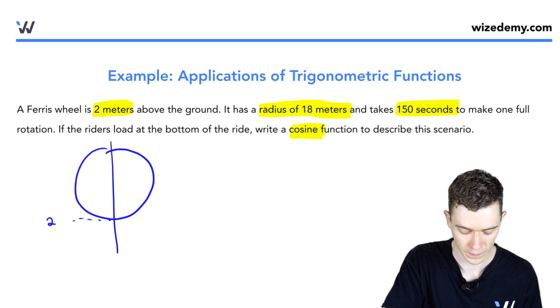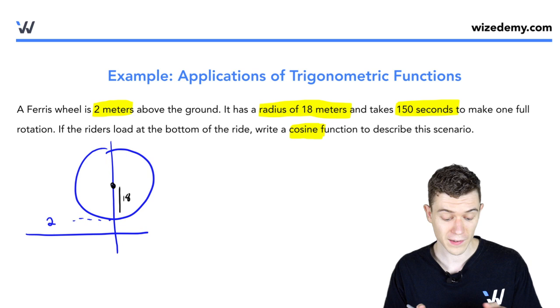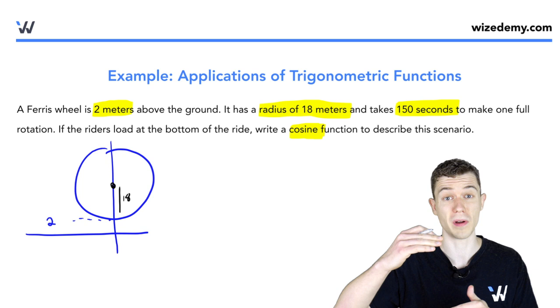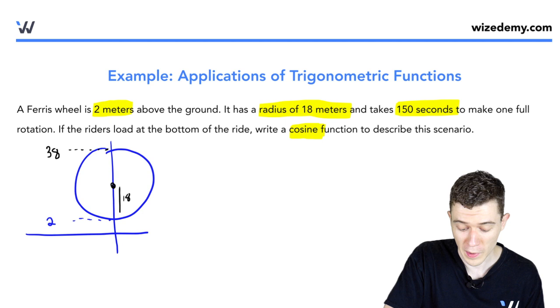Now it has a radius of 18. Well we can kind of see from this picture, if we're already up 2 at our lowest point, we have to go another 18 to get to the middle and then another 18 to get to the top. Well that's 18 plus 18 plus 2. That's a highest point of 38. So we've come up with our y max, which is 38.